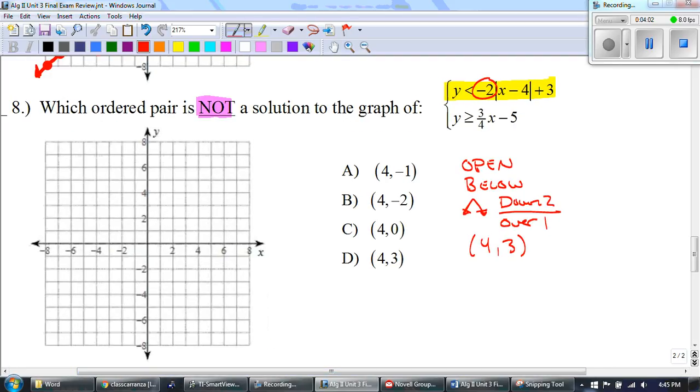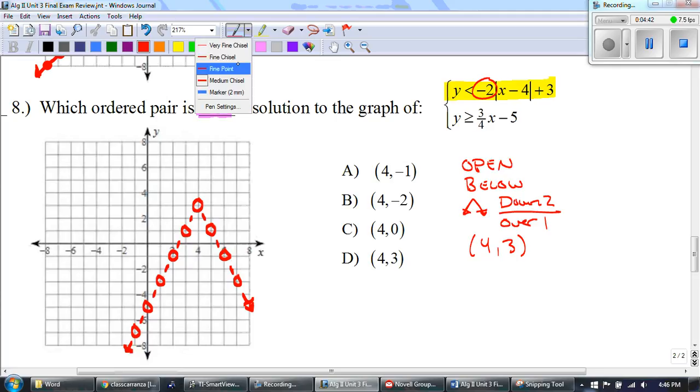So let's do all that. At (4,3), I am open and I have to go down two over one, down two over one, down two over one, and I'm doing this in both directions. And then we're drawing a dashed line, and I have to shade below this. So I'm just going to write myself a little note right here that I have to shade below.